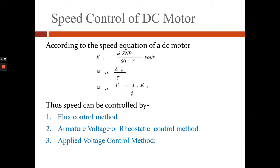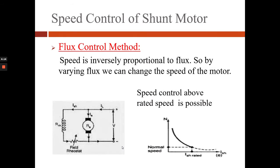The speed can be controlled by three methods: the flux control method, the armature voltage or rheostatic control method, and the applied voltage control method.